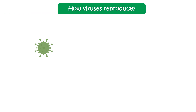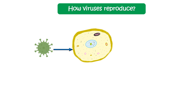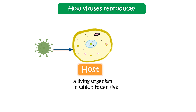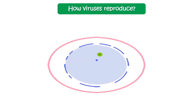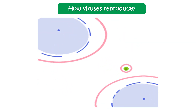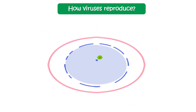So how do viruses reproduce? To produce more of their own kind, viruses need a host — a living organism in which they can live. Once a virus finds its host, it infects it. It then uses the machinery of the host cell to replicate its genetic material and form multiple copies of itself. In this way the virus infects the entire organism, which is why viruses are sometimes known as infectious agents.